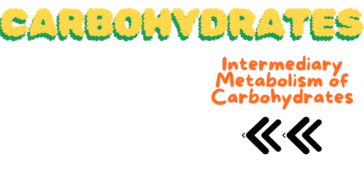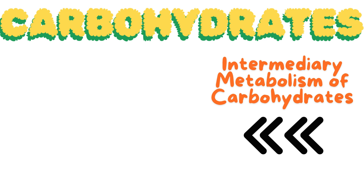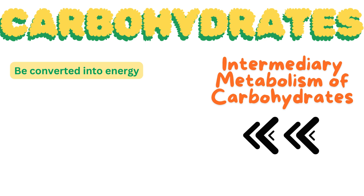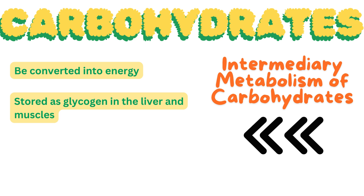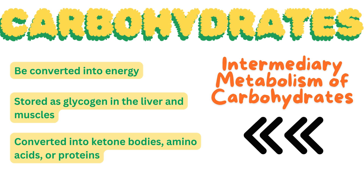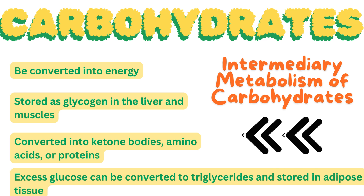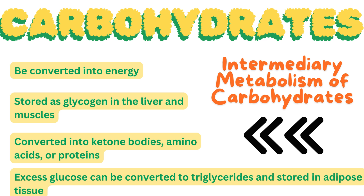Once absorbed, hexoses like glucose enter intermediary metabolism. Here, they can either be converted into energy, stored as glycogen in the liver and muscles, or converted into ketone bodies, amino acids, or proteins. Additionally, excess glucose can be converted to triglycerides and stored in adipose tissue.